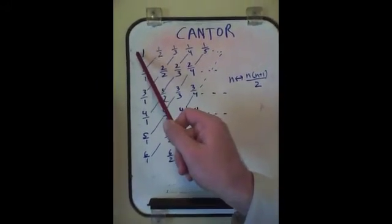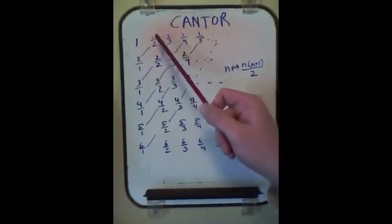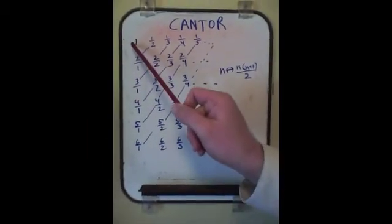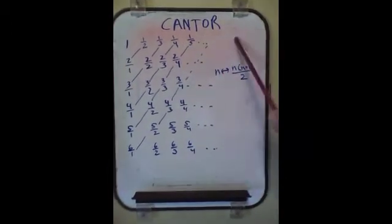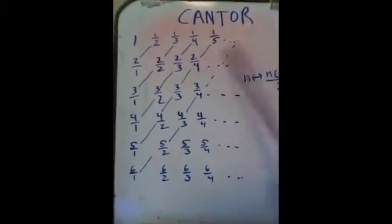We have 1, which would be 1 over 1. We're going to lay out every single rational number that can possibly exist with a general formula here. We have 1, 1 half, 1 third, 1 fourth, 1 fifth, to infinity. 2 over 1, 2 over 2, 2 over 3, 2 over 4, to infinity.